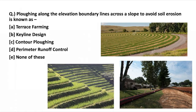Let's begin with the first question: plowing along the elevation boundary lines across a slope to avoid soil erosion is known as? Different methods of soil conservation are given, and the question is asking about the method where plowing is done along the elevation boundary line. This picture represents that method of soil conservation — these contour lines create a water break which reduces the formation of rills or gullies.